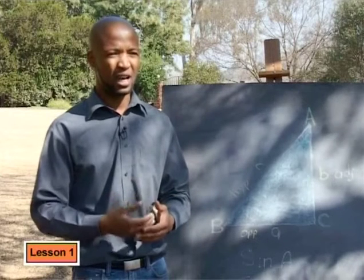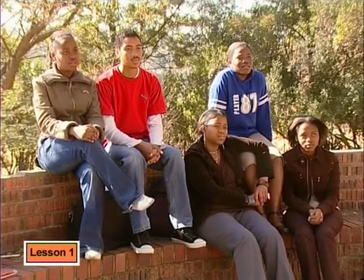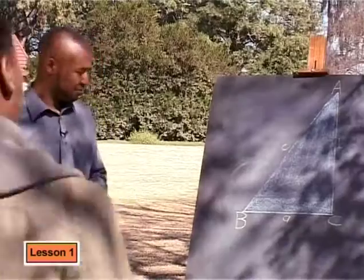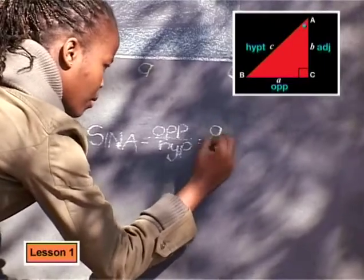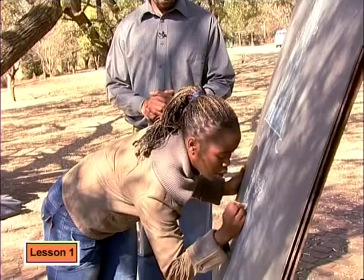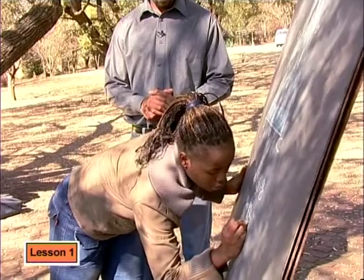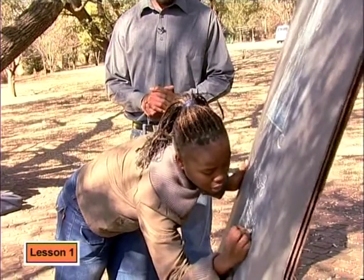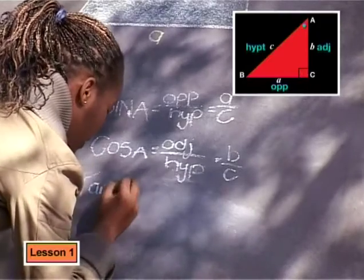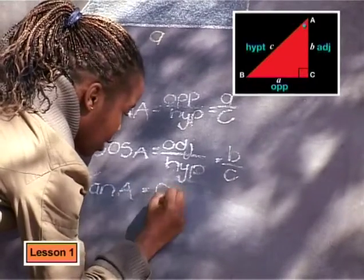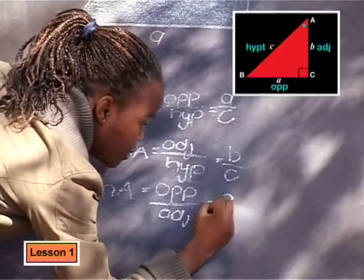Now can you tell from the diagram what the sine of angle A is as the ratio of the sides of triangle ABC? Sine A is the opposite side divided by the hypotenuse — that's a divided by c. So what about the cosine of A? That's adjacent divided by hypotenuse, so that should be b divided by c. And tan A is opposite divided by adjacent, which is then equal to a divided by b.